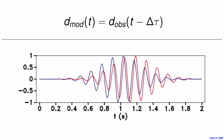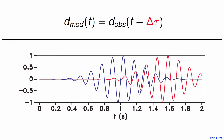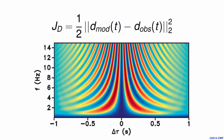This objective function uses a modeling operator that is just a shift of the observed data, which in this case is a tapered sine function. We include the time shift operator, move the model data in red, and compare it with the observed data in blue. If we build the objective function with this simple modeling operator, this is how it looks as a function of time lag and frequency.